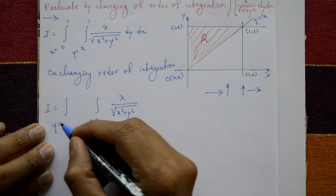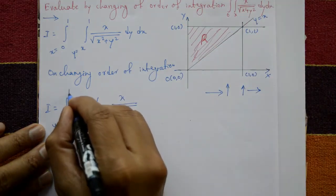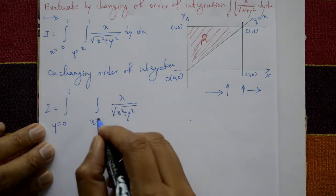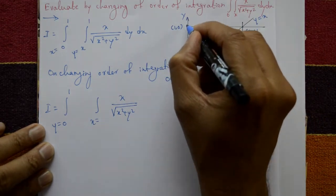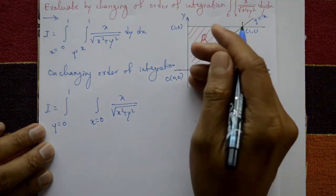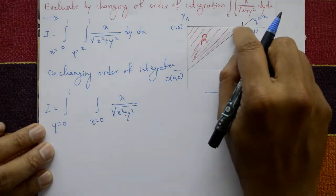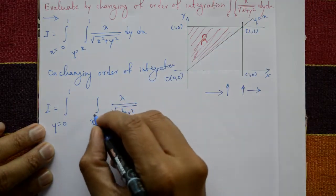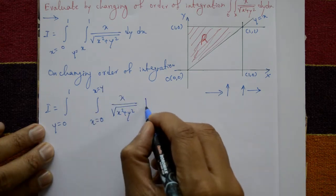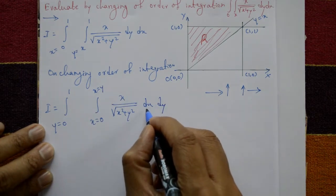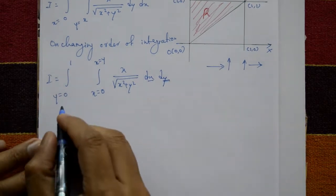So y goes from 0 to 1 as the first (outer) integral. Then y=x means x goes from the left curve to the right curve. The left curve is x=0 and the right curve is x=y (since y=x means x=y). So x goes from 0 to y. First we integrate with respect to x, then with respect to y.